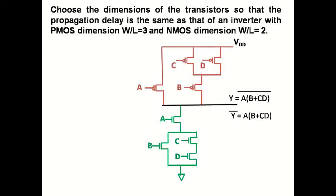For the circuit shown, choose the dimensions of the transistors so that the propagation delay is the same as that of an inverter with PMOS dimension W by L of 3 and NMOS dimension W by L equal to 2.